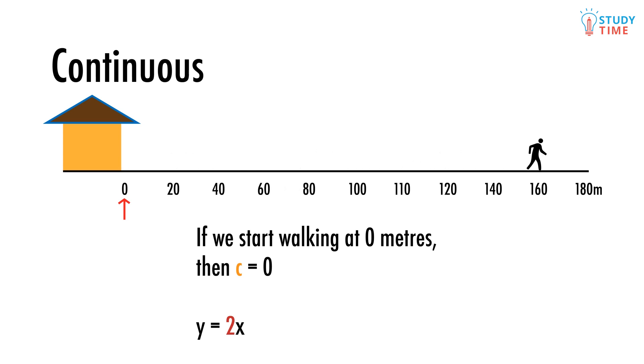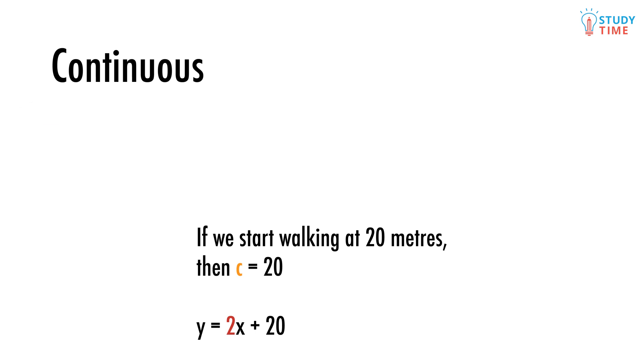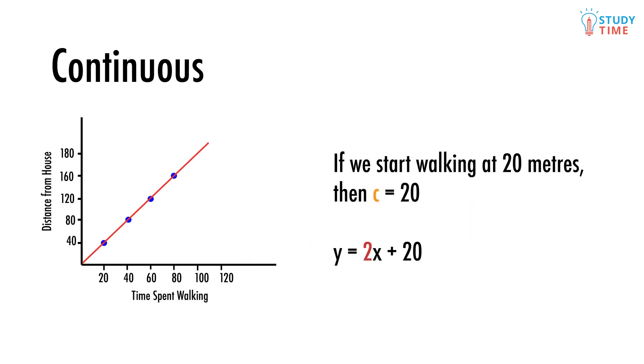But what if we started walking from 20 meters down the road? Well then c would equal 20. Every point in time on the graph would have to include an extra 20 meters of distance. The line would just be moved upwards, and the y-intercept would become 20.